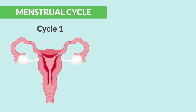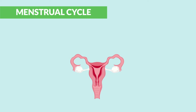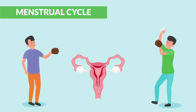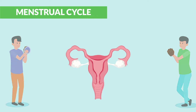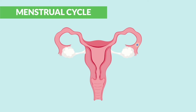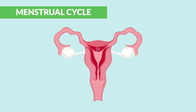The menstrual cycle itself is actually two cycles in one, working together, sort of like playing catch with a baseball — or in this case, playing catch with an egg. The ovaries toss an egg over to the uterus during ovulation, and the uterus gets thick in order to catch the egg in hopes that it will get fertilized with sperm and implant into the uterine wall in order to grow a little baby fetus.